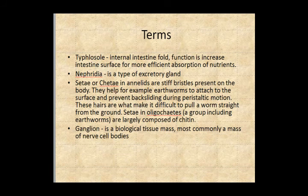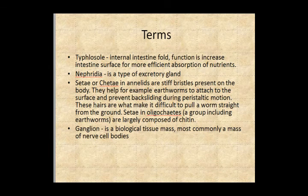We're going to see a couple other things. The typhlosole is a little fold inside the intestine that increases the efficiency of absorption by providing more surface area. There's a nephridia, which is an excretory gland in the worm. The setae, or chaetae, help it move. The ganglion is a nerve tissue mass — it's just nerve cell bodies — and it is what passes for a brain in this organism.